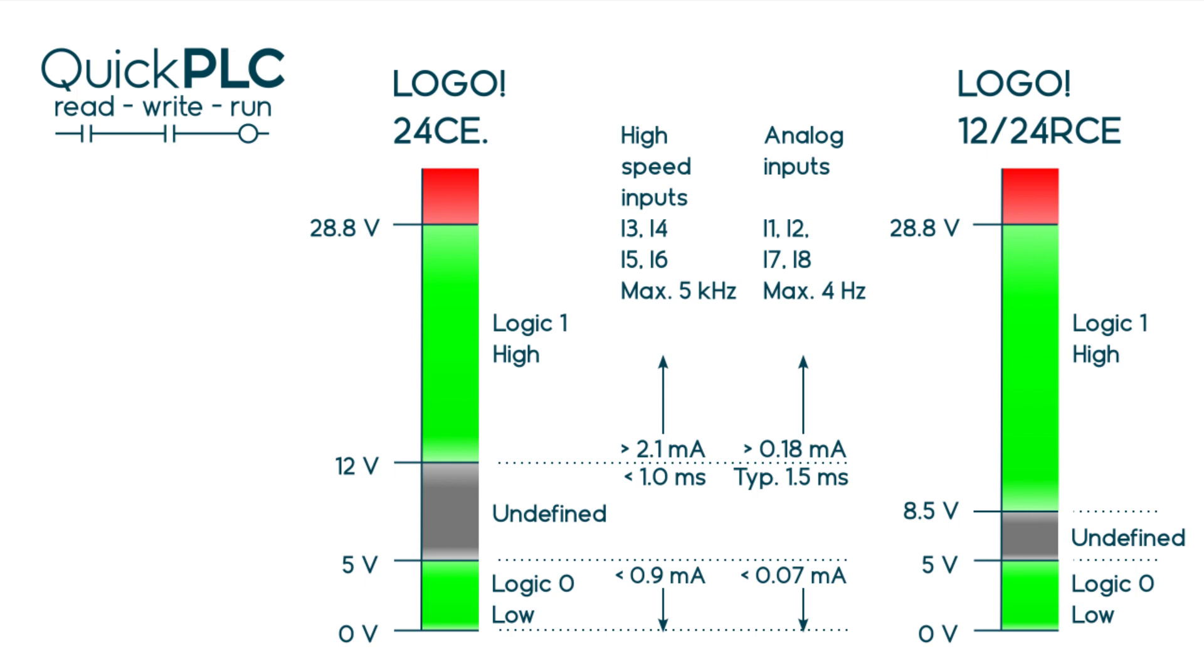We can calculate the input resistance from the voltages and currents given. For the high speed inputs we get 5 volt divided by 0.9 milliamps equals 5.5 kilo ohms. So at 24 volts they'll draw about 23 milliamps. The analog input resistance is about 5 volts divided by 0.07 milliamps so 72 kilo ohms and a 24 volt signal will draw about a third of a milliamp. Beware of this if using an older two wire sensor with built-in LED. The LED if it lights won't be very bright.